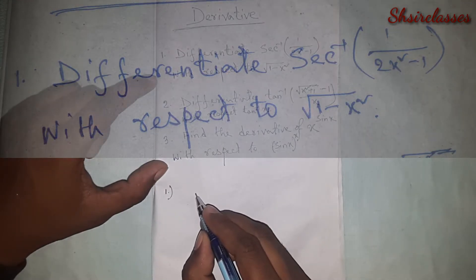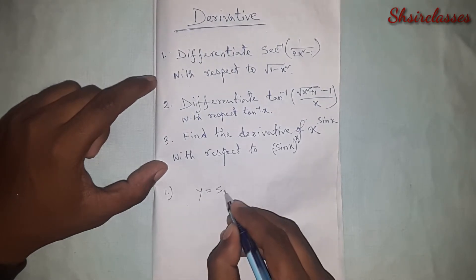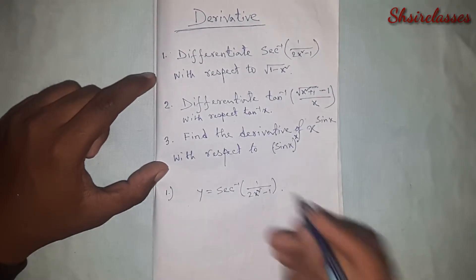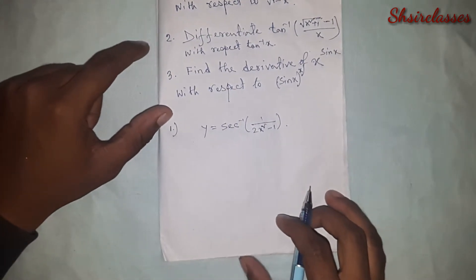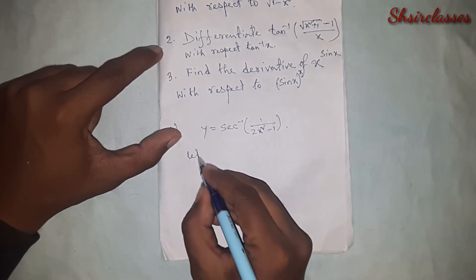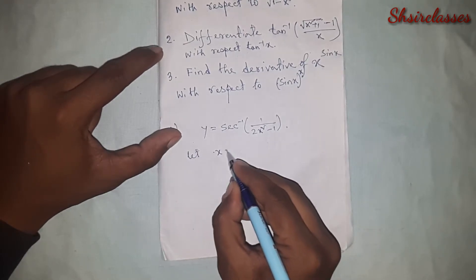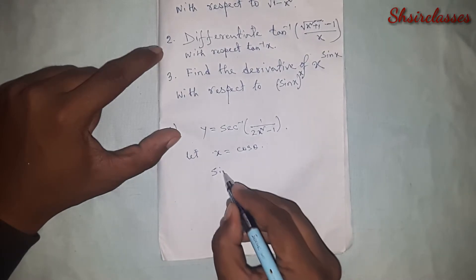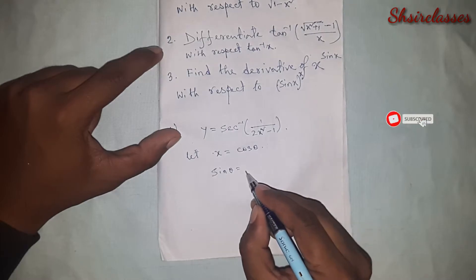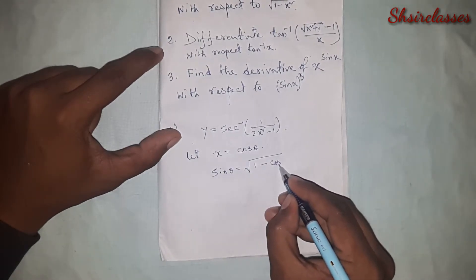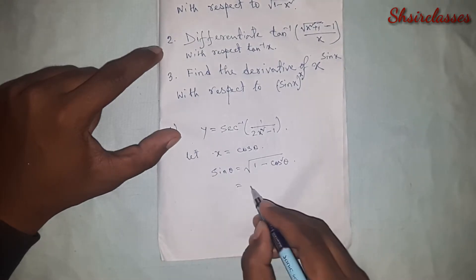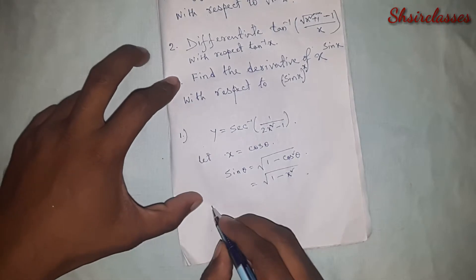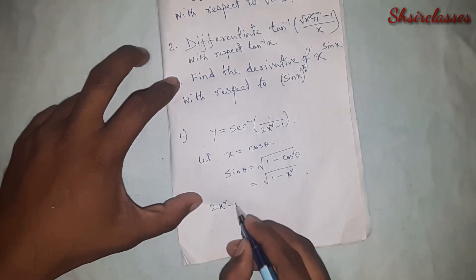We can write y equal to sec inverse of 1 upon 2x² minus 1. Let x equal to cos θ, so we can find sin θ equal to root over 1 minus cos²θ, which equals root over 1 minus x². For 2x² minus 1, we have to find this expression.